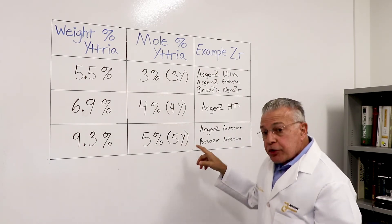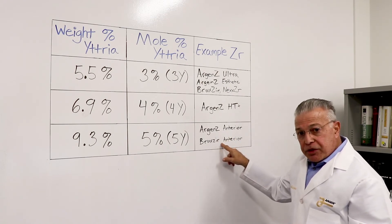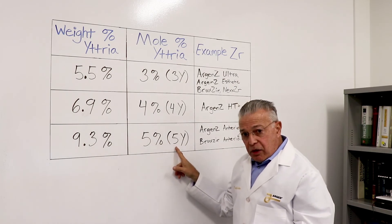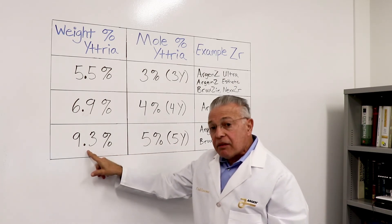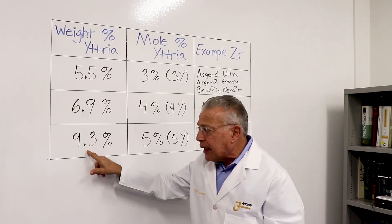If we jump to the super translucent zirconias like Arganzy Interior or Bruxer Z Interior, these are the 5Y zirconias. And 5Y is equivalent to about 9.3 weight percent. And again, on the label, you're going to see somewhat of a range.